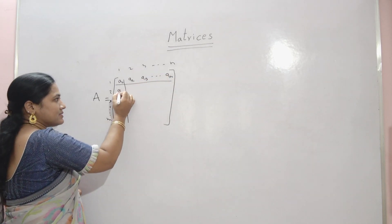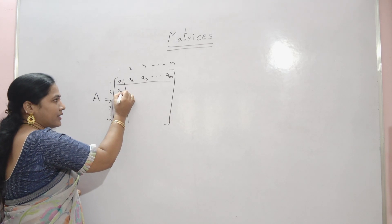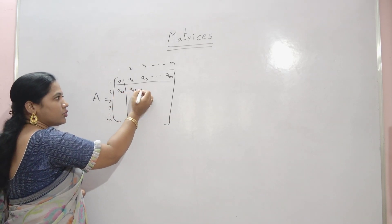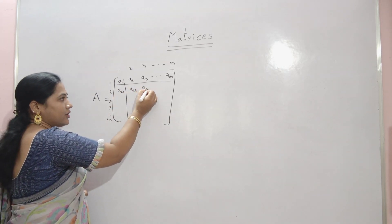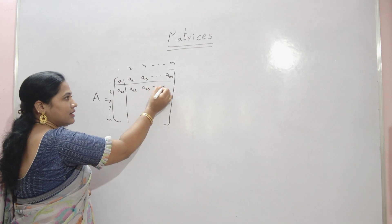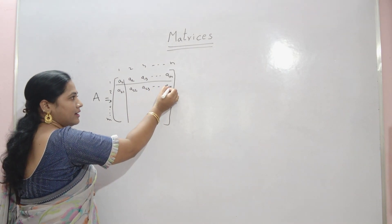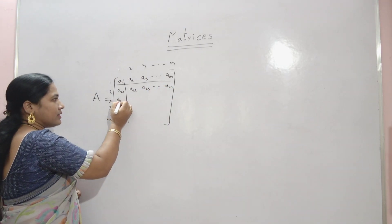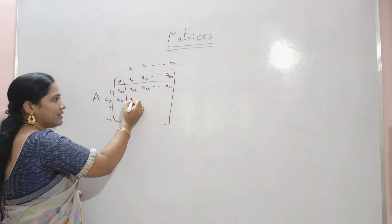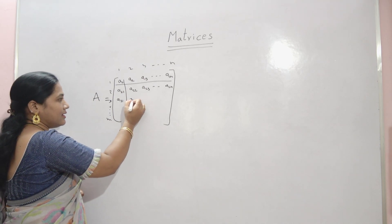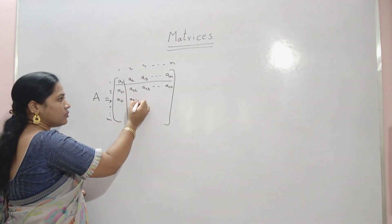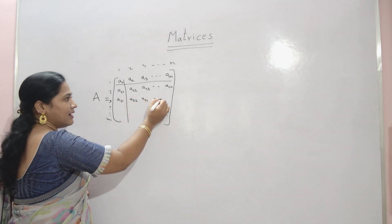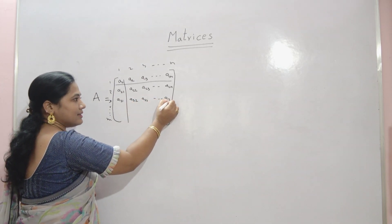Similarly, this is the second row: A21, A22, A23, and A2N. And the third row: A31, A32, A33, and A3N.